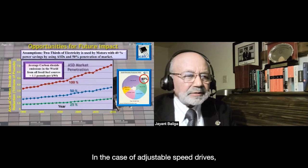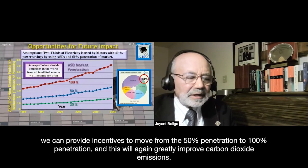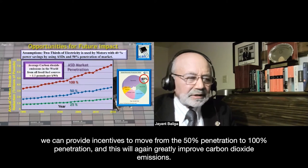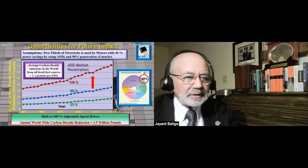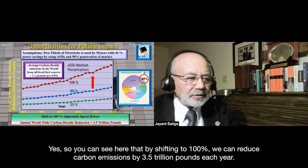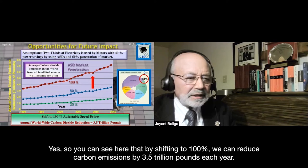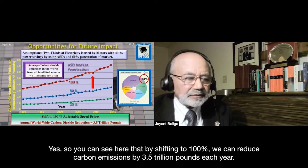In the case of adjustable speed drives, we can provide incentives to move from 50% to 100% penetration. By shifting to 100%, we can reduce carbon emissions by 3.5 trillion pounds each year.